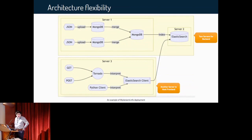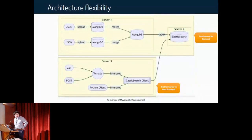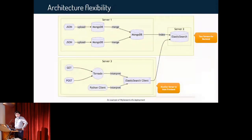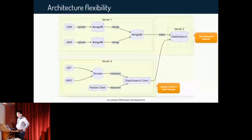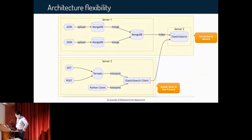Before I talk about scalability issues, I want to illustrate the flexibility of our BioThings API architecture. Each major component can be distributed across the network. For example, in this deployment we can have the API code and MongoDB running on server one, the Elasticsearch node running on server two, and the frontend running on server three. These major components are connected by configuration files, so the separation makes it easy to scale up or scale out any individual component. For example, to scale up the Elasticsearch nodes, we can replace server two with a more powerful workstation.